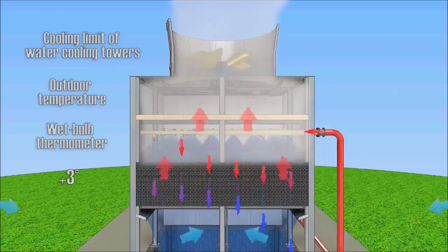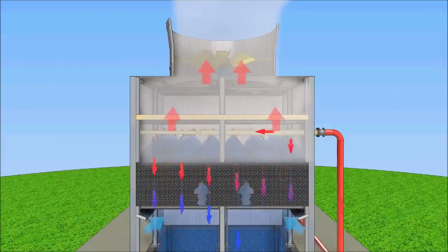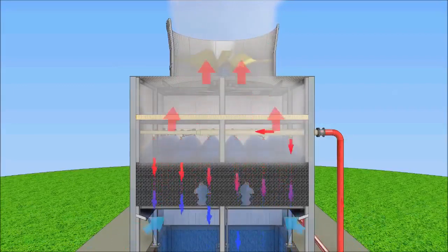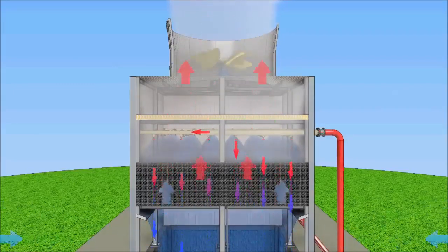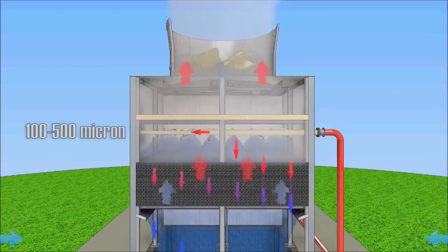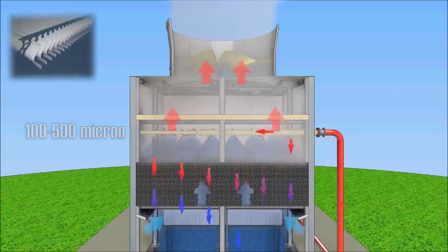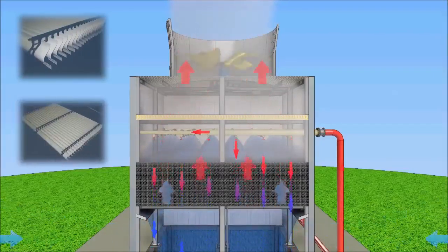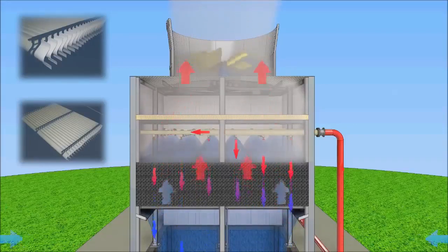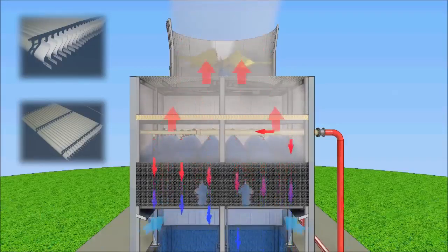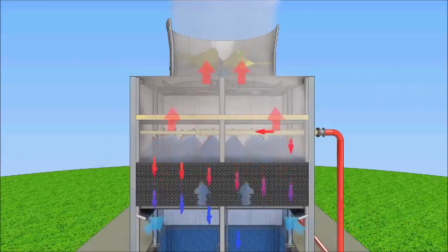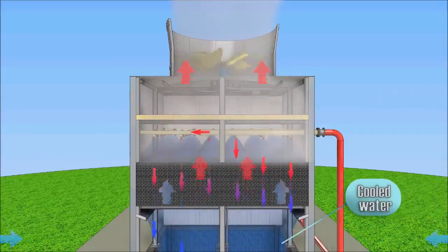In practice, the limit of cooling is the wet bulb temperature plus 3 degrees Celsius. Operating a cooling tower emits air saturated with water vapor and containing water droplets with a size of 100–500 microns. To prevent entrainment of water droplets, a drift eliminator is installed above the water distribution system.